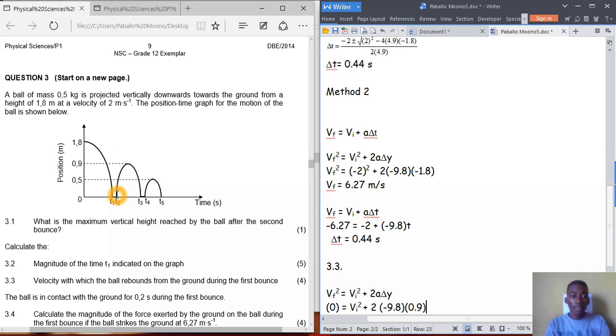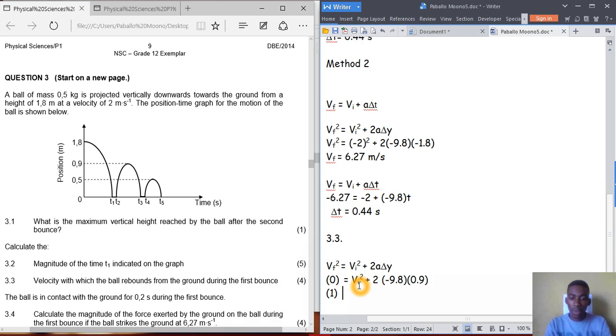Velocity on the graph is in the positive direction because upward is positive.